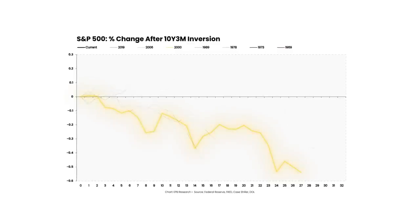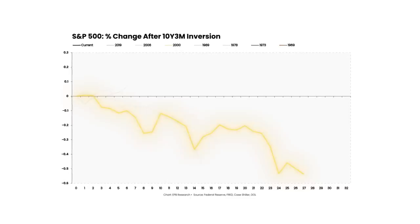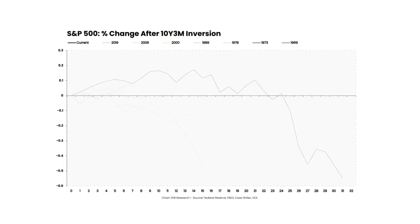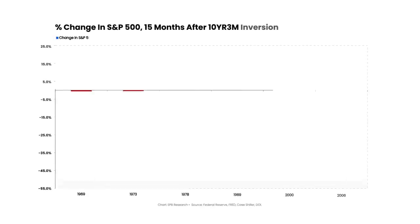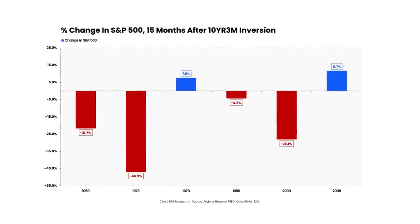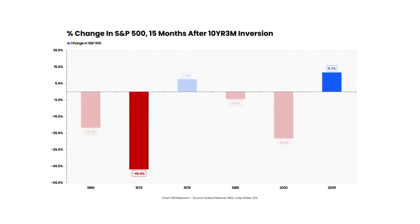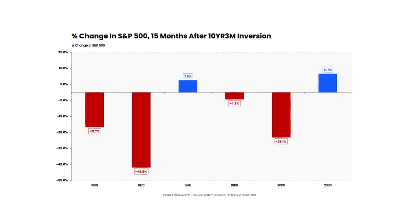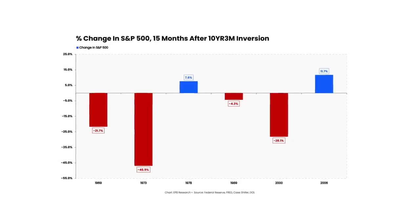Sometimes, like the 2000s recession, the stock market starts to decline immediately after the initial yield curve inversion, never moving higher. And sometimes, like ahead of the 2008 recession, the market can rally another 20% in the following 12 months before collapsing in the ultimate recession. To highlight the distribution of outcomes, 15 months after the 10-year 3-month curve inverted, the S&P 500 was down 47% at most and was up 12% at best — a 59% gap in performance. The average and modal performance for the S&P 500 15 months after inversion is negative, but randomness still exists.